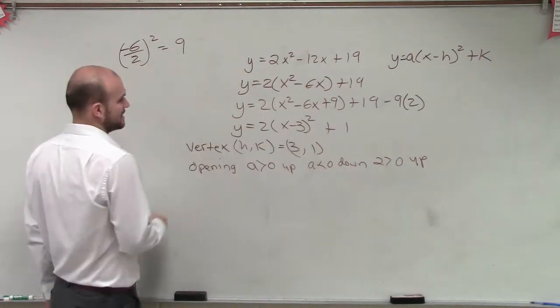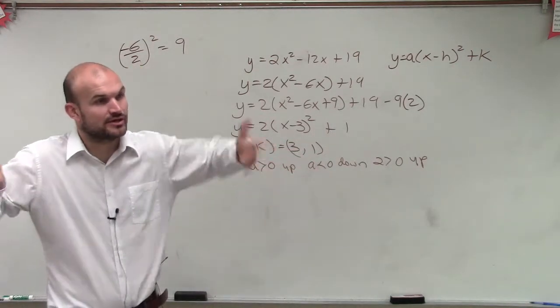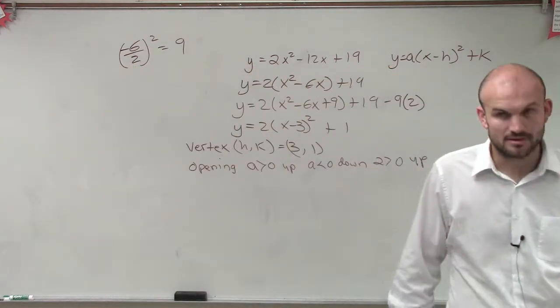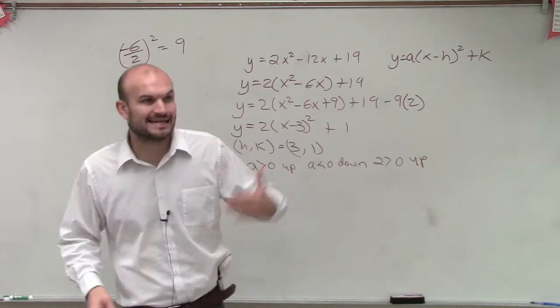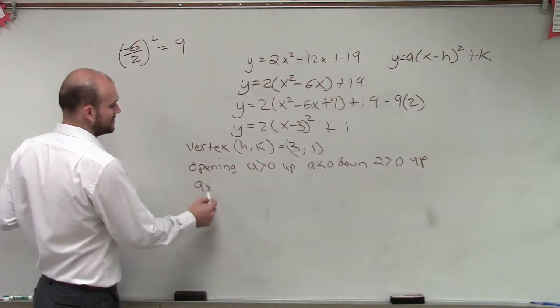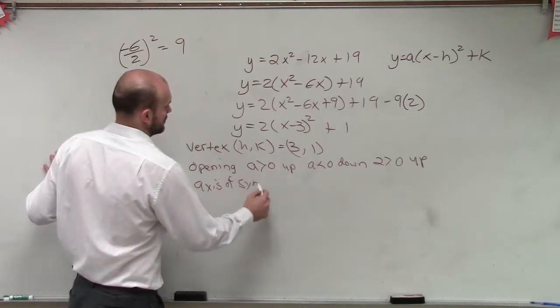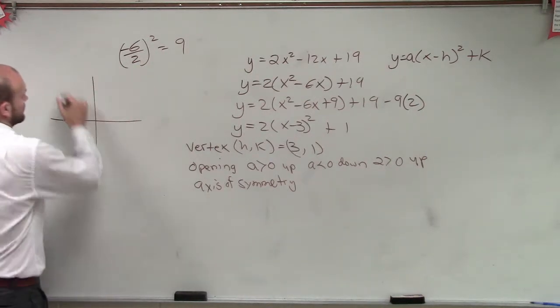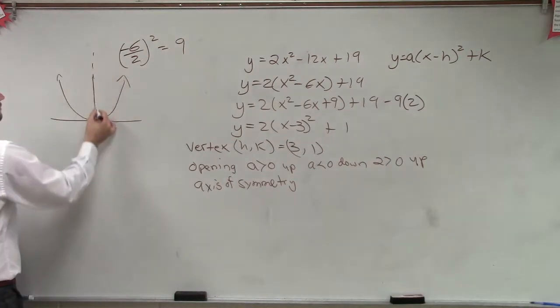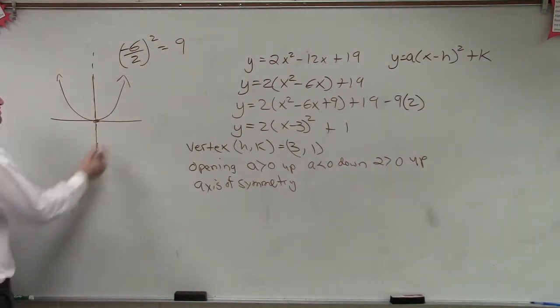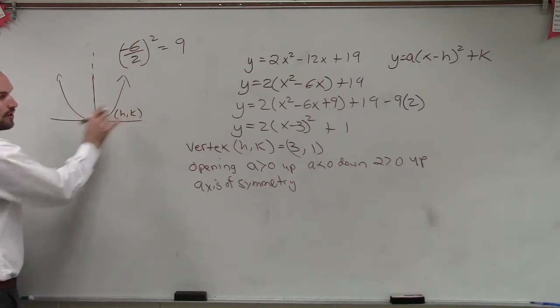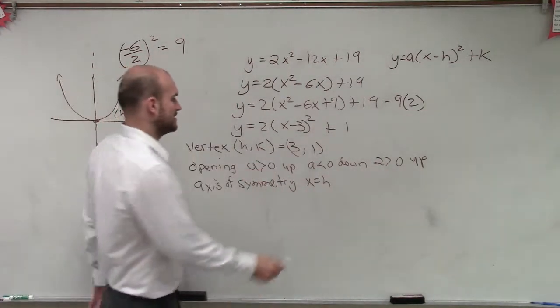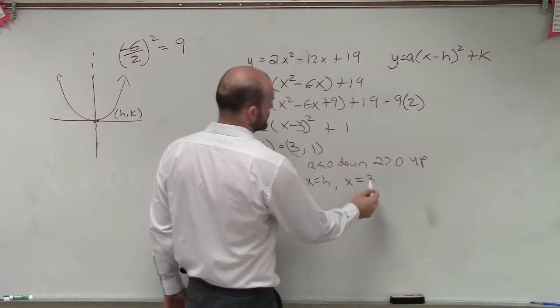Then it says the axis of symmetry. Now, since my graph opens up, we know that my axis of symmetry is going to be a vertical line. So that vertical line has to go through the vertex. Correct? So therefore, since it's a vertical line and it goes through my vertex, I know that my axis of symmetry. So remember, so my graph looks like this. It opens up and it has a vertical axis of symmetry. So therefore, it goes through the h-coordinate of my vertex. So we could say x equals h. Well, my h in my vertex is 3. So therefore, my axis of symmetry, x equals 3.